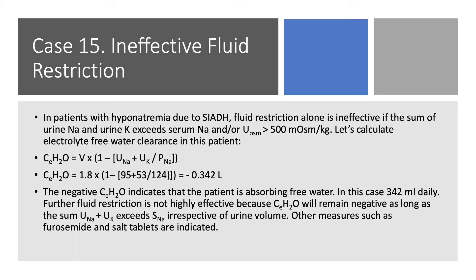Follow these two rules: if urine osmolality is above 500, or if the sum of urine potassium and sodium is more than serum sodium, then fluid restriction isn't going to work. You have to do something else — maybe salt tablets, maybe urea packets, maybe a loop diuretic.